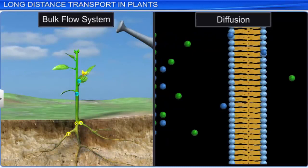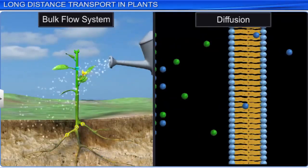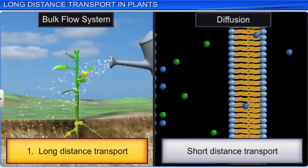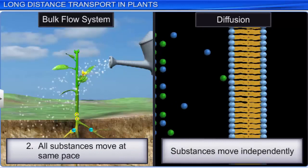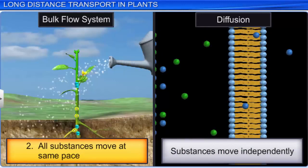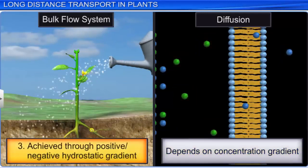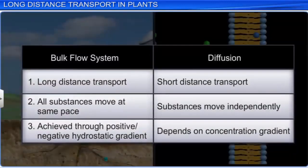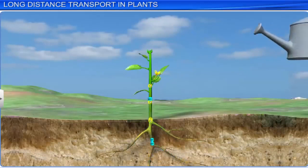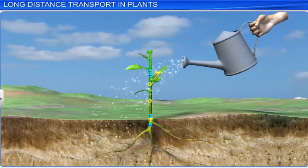To conclude, the bulk flow system differs from diffusion in three ways. First, it transports substances across long distances in plants, unlike diffusion. Second, unlike diffusion in which substances move independently, the bulk flow system moves all substances at the same pace. Third, diffusion depends on a concentration gradient, while the bulk flow system is achieved through a positive or negative hydrostatic gradient. Therefore, long distance travel in plants is carried out by a bulk flow system in the plant's vascular bundles, consisting of xylem and phloem.